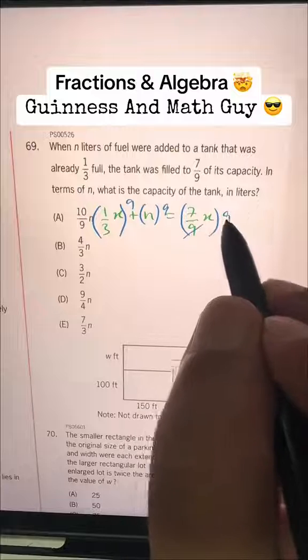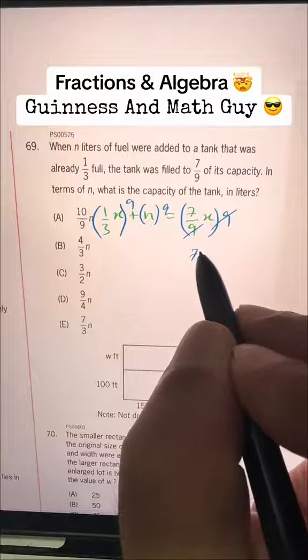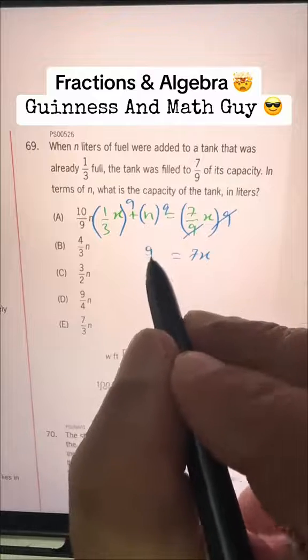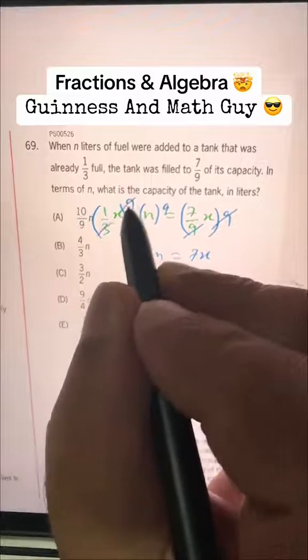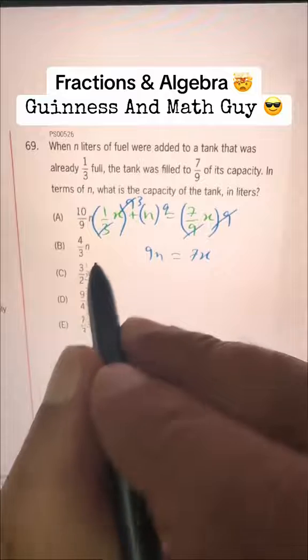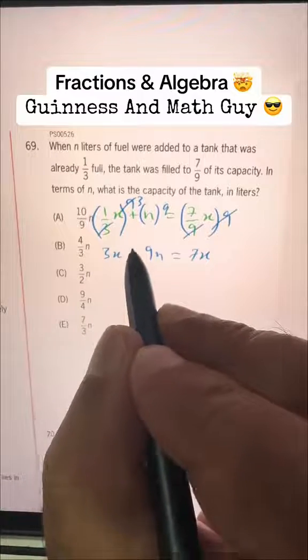This 9 is cancelled by this 9, so 7X. 9 times N is 9N here and 3 times 3 is 9, so 3X we have here.